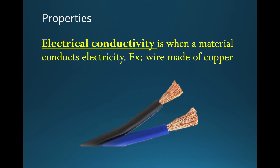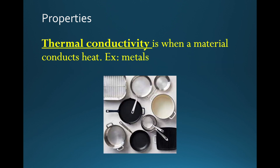Then we have electrical conductivity — the substance, the metal, is able to conduct electricity. Copper, as we know, is the best conductor of electricity. And lastly, we have thermal conductivity — that's when a material can conduct heat. If you think of pots and pans, which are made of metals or sometimes ceramic or glass, those substances will allow for heat to pass through them and transfer that heat to the food we're trying to cook or bake. So that is thermal conductivity — it allows for heat to pass through and they conduct heat.